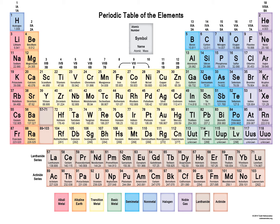Mendeleev had already arranged elements in horizontal rows and vertical columns, and this is found even in the modern periodic table. The elements have been arranged in horizontal rows and vertical columns called groups. Let us count how many periods and how many groups are present in the modern periodic table. When counting horizontal rows, you go from left to right. These horizontal rows are called periods.